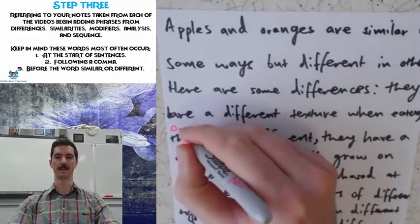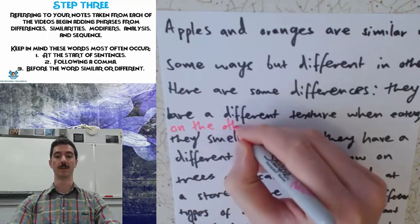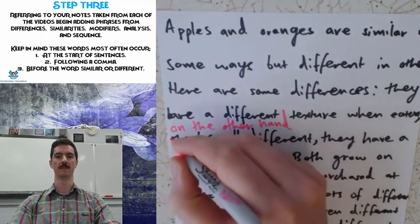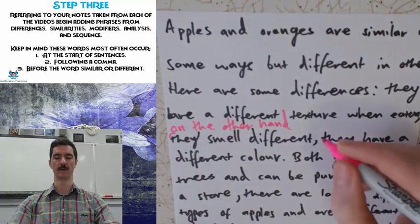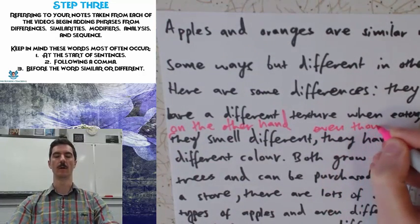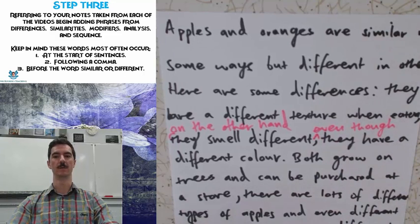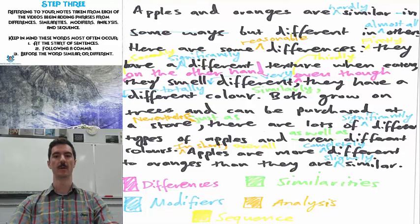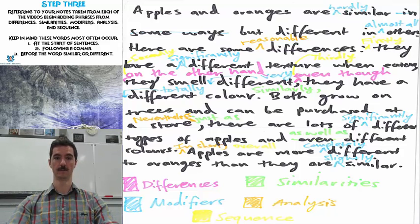In my piece, for differences, I've looked to the section that has all of the differences explained. You'll notice that a colon was used — it says 'here are some of the differences:' and just lists three different ideas. It's really important in essay writing that you should never be using a colon like this. A semicolon is better, but whenever possible give your sentence a full sentence rather than a quick listing of ideas. The sentence on differences reads as follows: 'Here are some differences. They have a different texture when eaten. They smell different. They have a different color.'